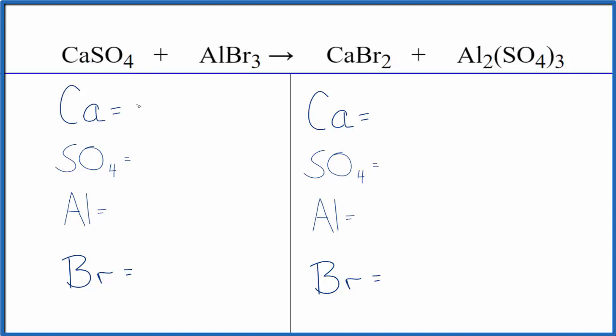So I have one calcium here and then we're gonna use a trick to make this easier and you can use this with double displacement reactions. We have a sulfate here and then we have it again here. So I'm just gonna count that as one thing. So I have one sulfate ion here, one aluminum, three bromine atoms.